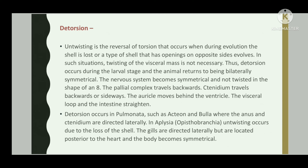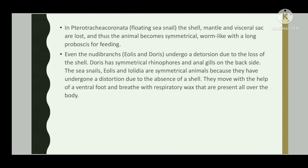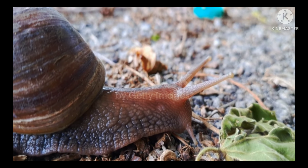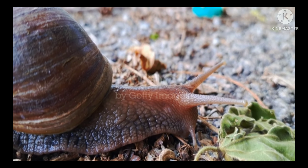Detorsion occurs in Pulmonata such as Aplysia and Bulla, where the anus and ctenidium are directed laterally. In Aplysia, untwisting occurs due to the loss of the shell; the gills are directed laterally but are located posterior to the heart and the body becomes symmetrical. In Pterotrachea coronata, a floating sea snail, the shell, mantle, and visceral sac are lost and thus the animal becomes symmetrical, with a long proboscis for feeding.